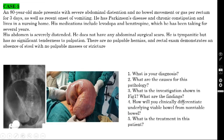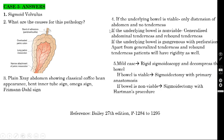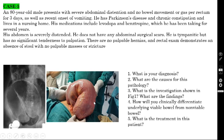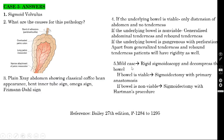How will you clinically differentiate whether the underlying bowel is viable or non-viable? If the underlying bowel is viable, the abdomen is only distended with no tenderness. If the underlying bowel is non-viable, there will be generalized abdominal tenderness and rebound tenderness. If the bowel is gangrenous with perforation, apart from generalized tenderness and rebound tenderness, the patient will also have board-like rigidity. By physical examination alone, without sophisticated investigations, you can tell whether the bowel is viable or gangrenous.